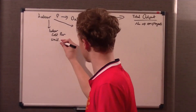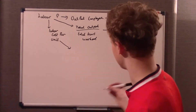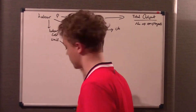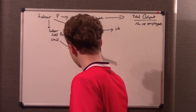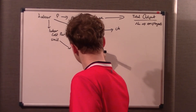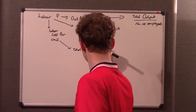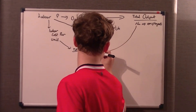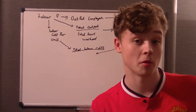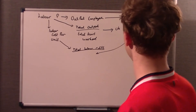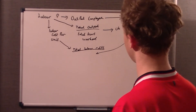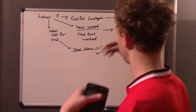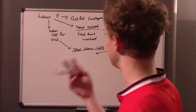Your labour cost per unit is your total labour costs over total output — that shows you, per unit of output, how much it costs you. So: output per employee is total output divided by number of employees; UK productivity is total output divided by total hours worked; labour cost per unit is total labour cost divided by total output.